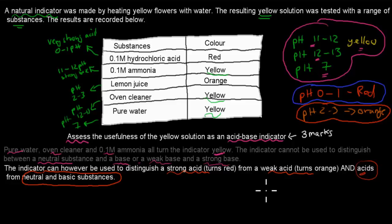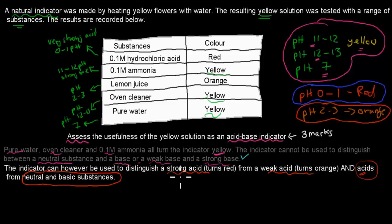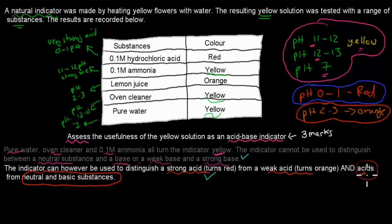If you mentioned all of these points, you get three marks: one mark for identifying that it's not useful to distinguish between basic and neutral substances; another mark for identifying that it can distinguish between weak and strong acids (strong turns red, weak turns orange); and a third mark for identifying that it can distinguish acids from neutral and basic substances. That's three out of three.